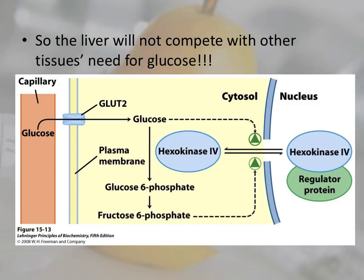What hexokinase 4 is affected by instead is fructose-6-phosphate, which is further downstream. This is where the pentose phosphate pathway splits off. If fructose-6-phosphate starts to accumulate, it comes in and turns off the liver's form of hexokinase 4.